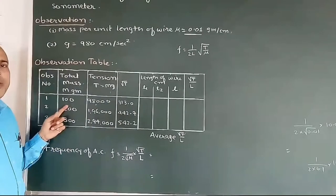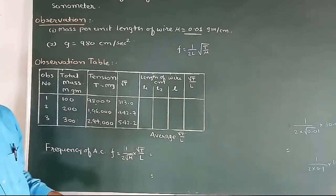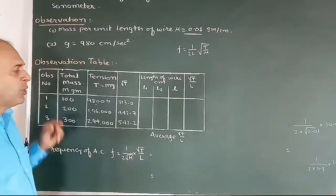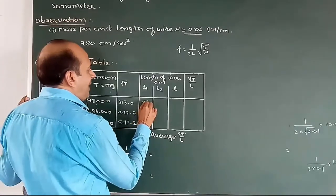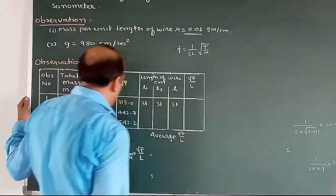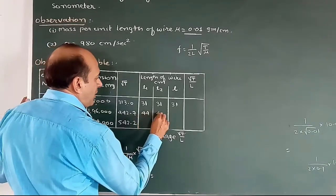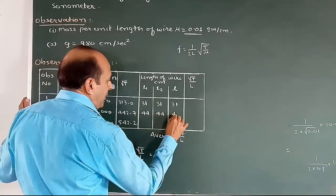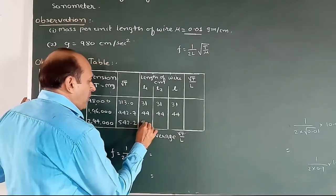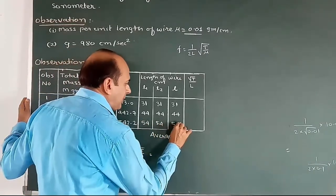For the first, 100 grams was there. The tension was 98,000. Square root is 313.0. Let me note down the length was 31 centimeters: 31, 31, and 31. The average is also 31. Now, for the second reading, it was 44 centimeters: 44, 44, and 44 centimeters. For the third reading, for 300 grams, we have noted it was 54, 54, and 54 centimeters.